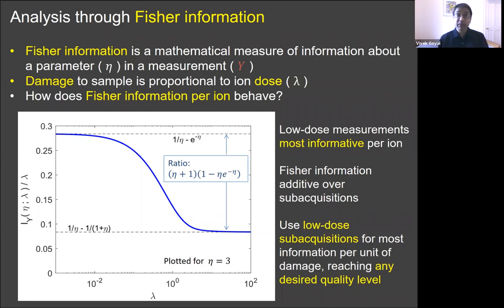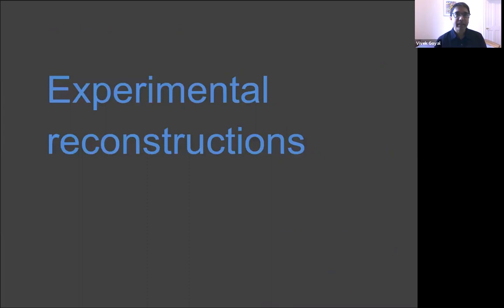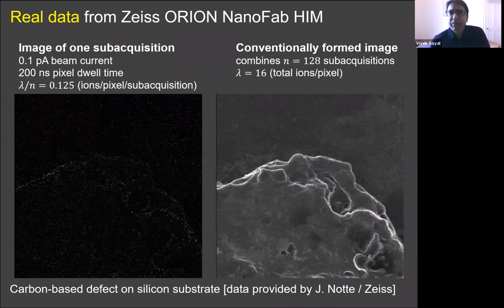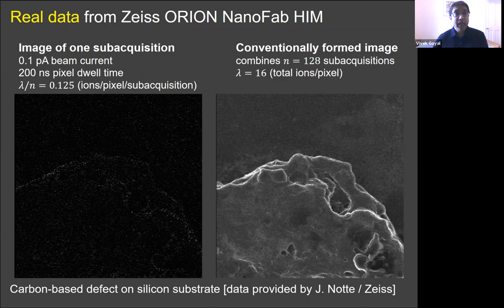Also, Fisher information is additive over subacquisitions. So this variation of the normalized informativeness suggests what we should do. It suggests that we should use a very low dose because that's how you get the most information per unit of damage to the sample. And then using additivity, just have enough of those low dose subacquisitions to reach any desired quality level. One of the kind of fun aspects of this is that the simple expressions for the asymptotes on the graph lead to a simple expression for the improvement factor from this method. And you can see that that improvement factor is almost the same as the eta plus one factor of loss that we had from the randomness of the beam. So this introduction of time resolution is almost the same as having a physically impossible deterministic beam.